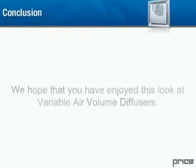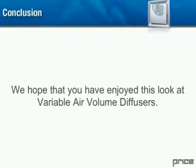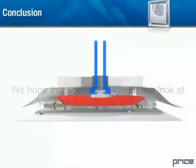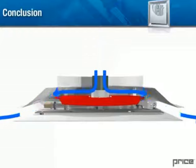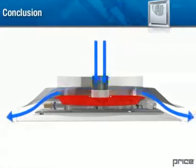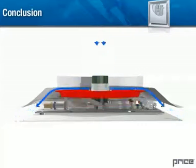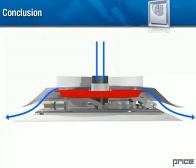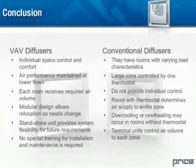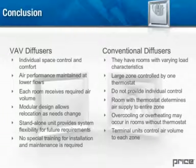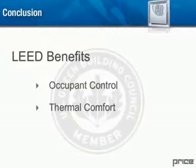Conclusion: We hope that you've enjoyed this look at variable air volume diffusers. We've explored many of their aspects, including their concept of using self-modulating diffusers to monitor individual space conditions and adjust airflow to satisfy occupants' selected levels of comfort. We've compared the differences between VAV diffusers and conventional diffusers, and we've seen the numerous advantages that they offer. We've listed the benefits that can help achieve LEED certification.